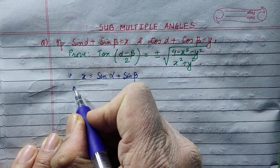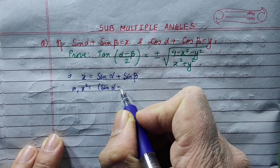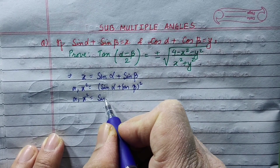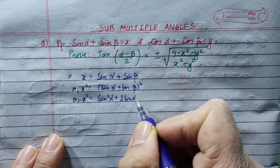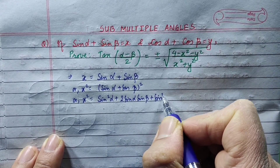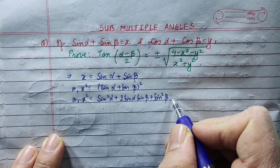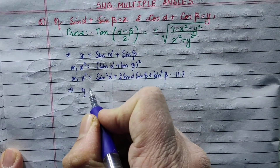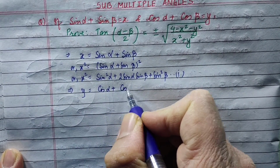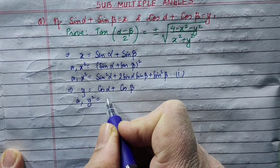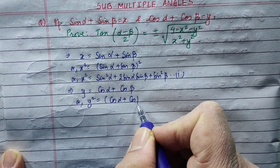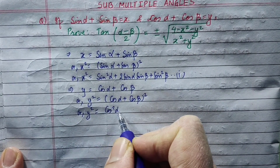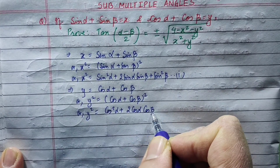We compute x square. x square equals (sin alpha plus sin beta) squared. Then we take y square. y is equal to cos alpha plus cos beta, so y square equals (cos alpha plus cos beta) squared.